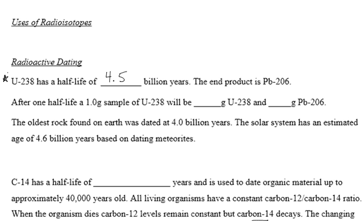So if you have a rock that weighs one gram, and half of that rock is 0.5 grams of U-238 and 0.5 grams of lead-206, then you know that rock has gone through one half-life because it went from one gram to 0.5 grams. The oldest rock found with that half-life would be 4.5 billion years old, based on the half-life of U-238.